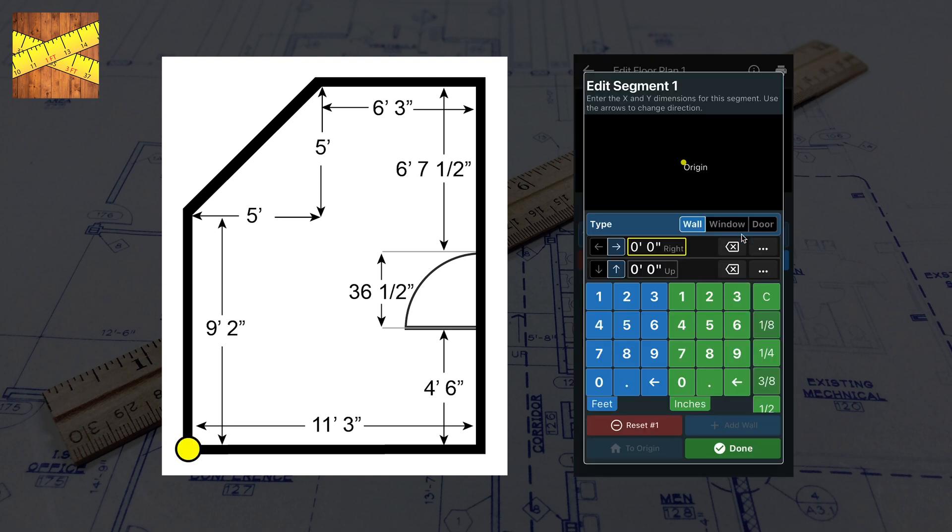If we start at the bottom left corner of our plan, our first wall is 11 feet and 3 inches to the right.